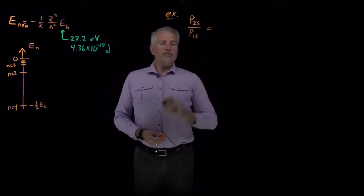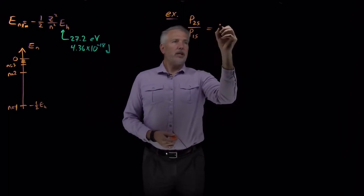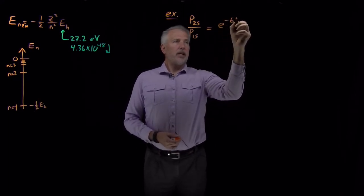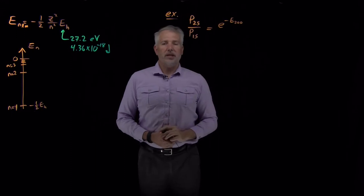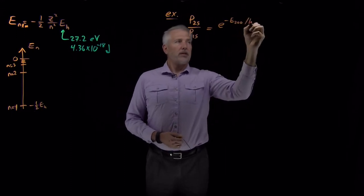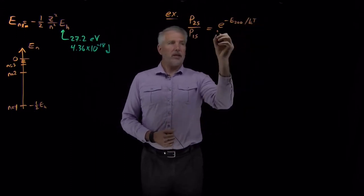And we know that Boltzmann tells us that that's just going to be e to the minus energy of the 2s state or the 2,0,0 state over kT.